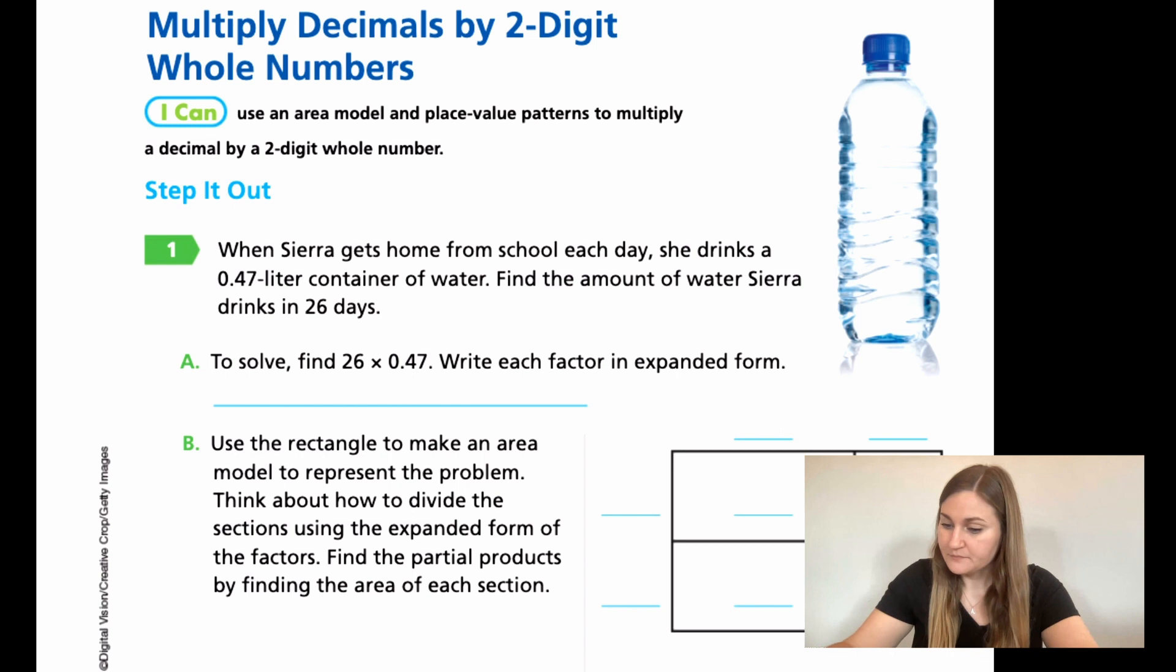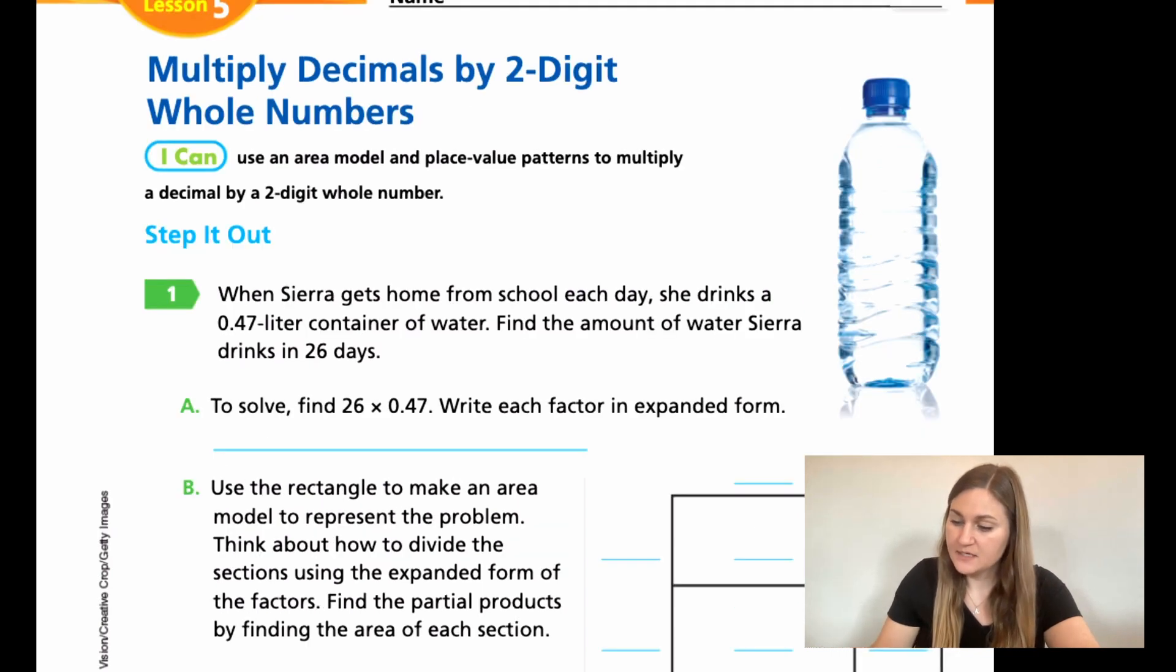Alright, so moving into the lesson, we have a step it out problem number one. It says when Sierra gets home from school each day, she drinks a 0.47 liter container of water. Find the amount of water Sierra drinks in 26 days. So for A, it says to solve, find 26 times 0.47, but write each factor in expanded form. So what this is asking is break apart the numbers so that it's showing what place value it has. For the 26, I'm going to break that part into 20 and 6. So I have 20 plus 6. Then, for the 0.47, I'm going to have 0.40 and 0.07. So the 4 is in the tenths and the 7 is in the hundredths.